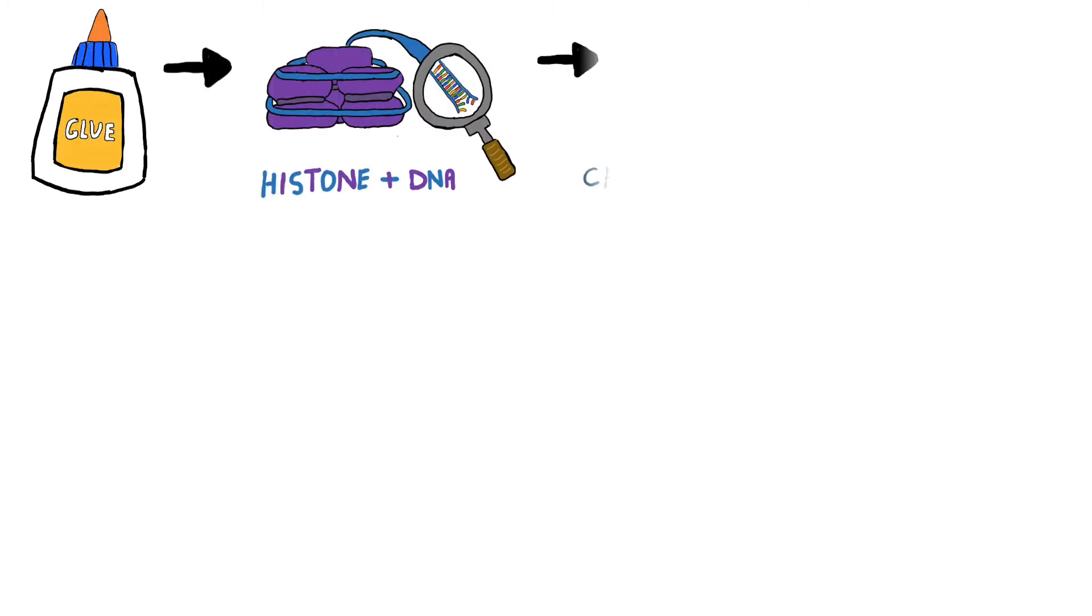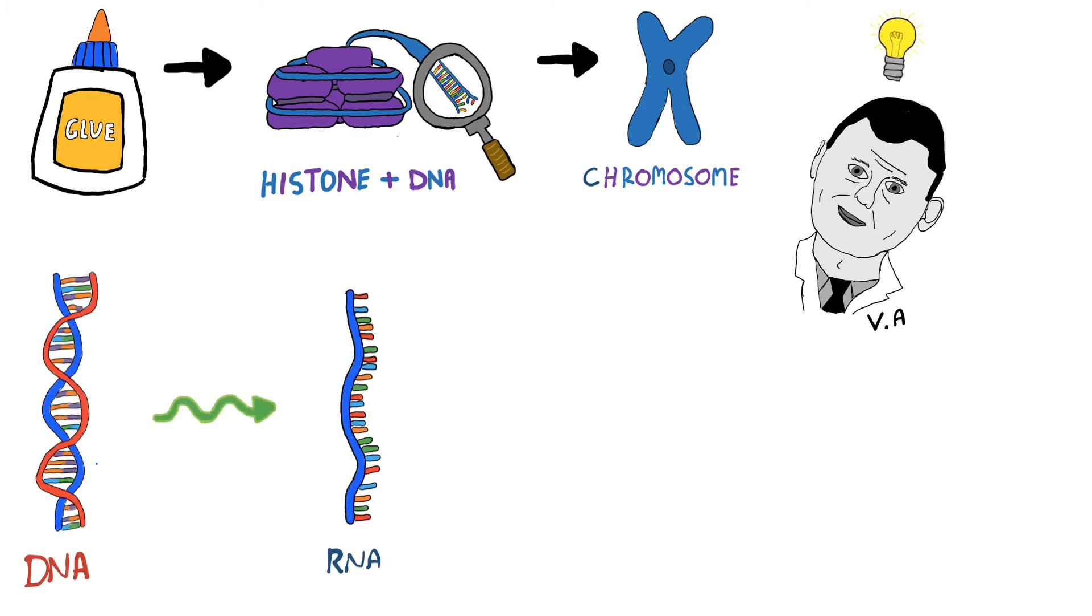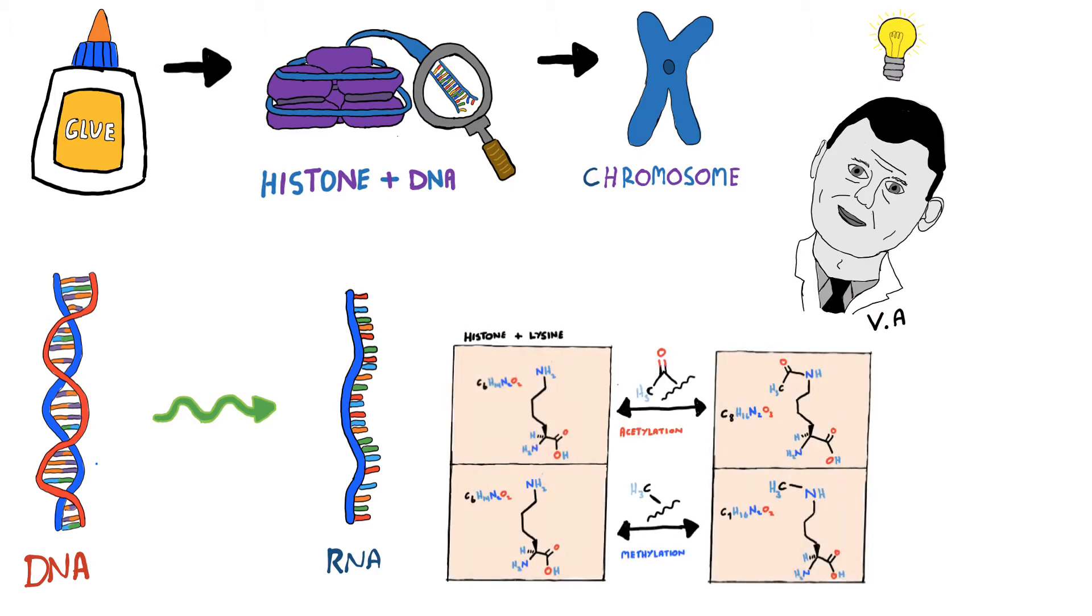Histone proteins within chromatin were considered nothing more than glue holding DNA together as chromosomes, until Vincent Alfre hypothesized that they had a fundamental role in transferring DNA to RNA. He hypothesized that if histones were modified with functional groups, it would alter its positive charge, affecting its interaction with negatively charged DNA.